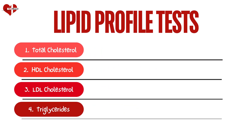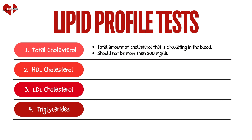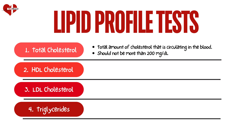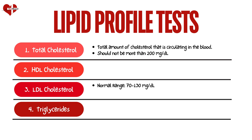Total cholesterol is the total amount of cholesterol circulating in your blood and it should not be more than 200 mg per deciliter. LDL is normally between 70 to 130 mg per deciliter; however, it must be less than 100 mg per deciliter to meet the normal range. Although you need some LDL, having too many can cause problems such as the buildup of plaque in arteries.